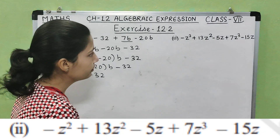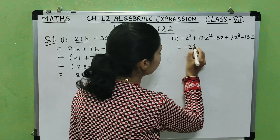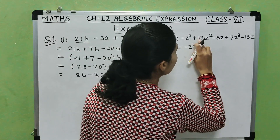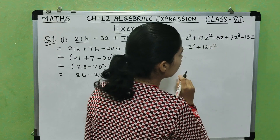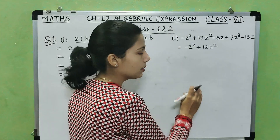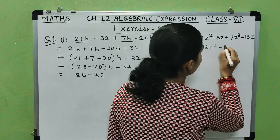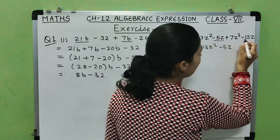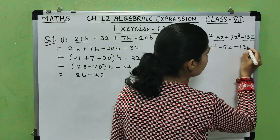Now see the second part. The first term of this algebraic expression is minus z square. We will consider only the terms with z square. The second term is also with z square. There are two terms with z square. Next, if we take minus 5z — minus 5z and minus 15z are like terms, so minus 15z.